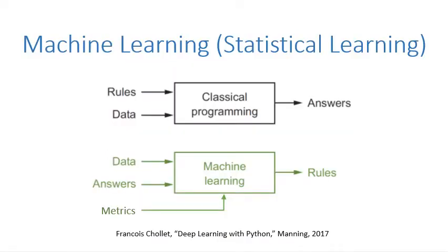Machine learning is about teaching machines or computers to learn. It's based on probability and statistics, so it's part of statistical learning.